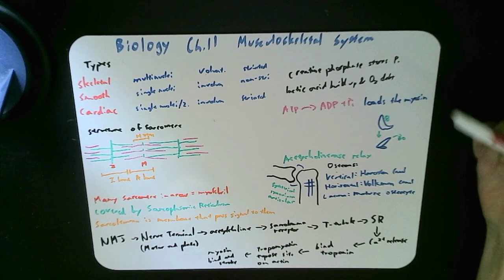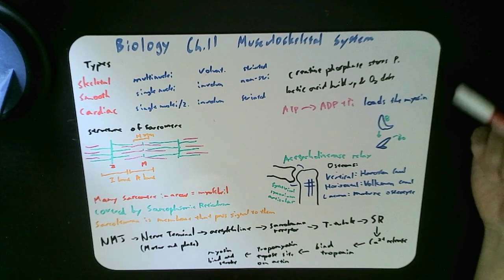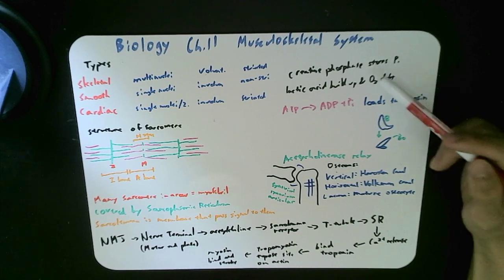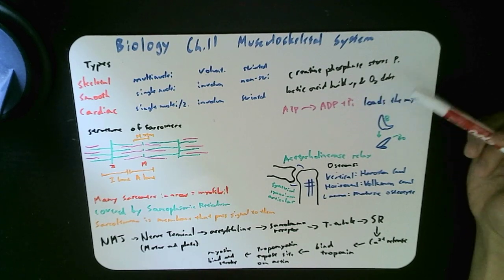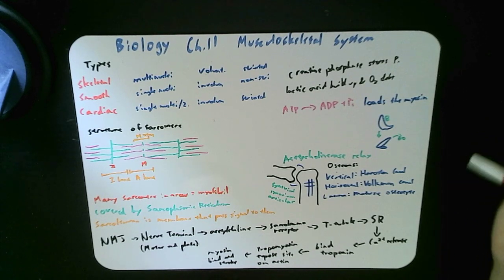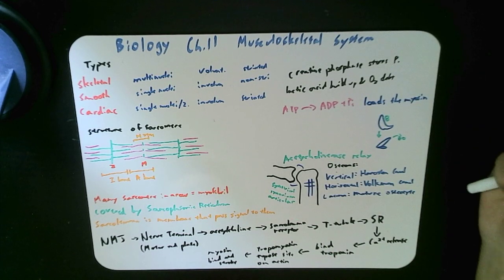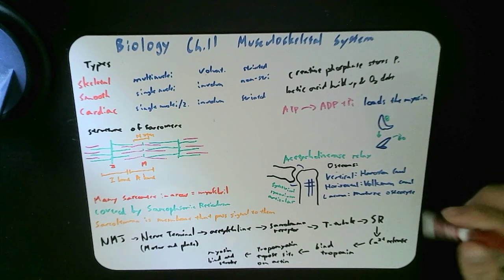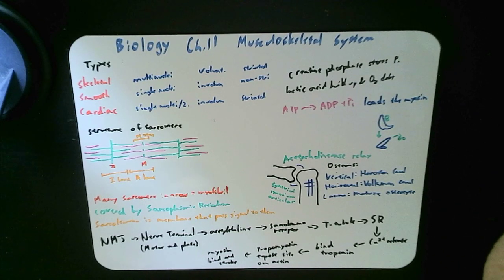However, lactic acid can build up as a result of anaerobic exercise. And hence you also have your O2 debt, which your body requires O2 to move out the lactic acid because it will need to be converted back to pyruvate and go through the cycle.